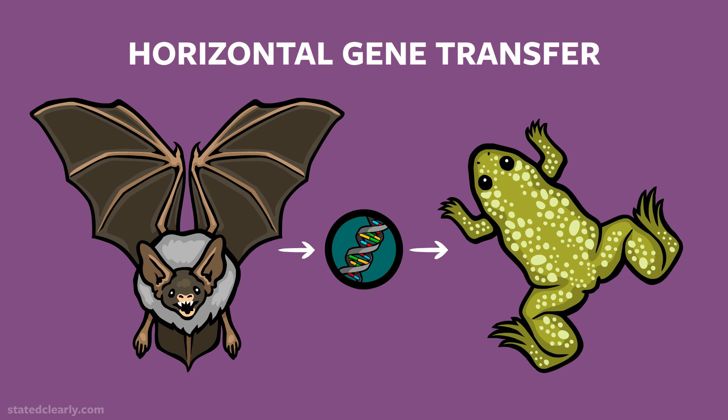As you might imagine, complete horizontal gene transfers in plants and animals appear to be very rare. But when they do happen, they allow genes to hop from one species to another — from one closed gene pool to another. This, along with normal mutations, gives natural selection brand new toys to play with.